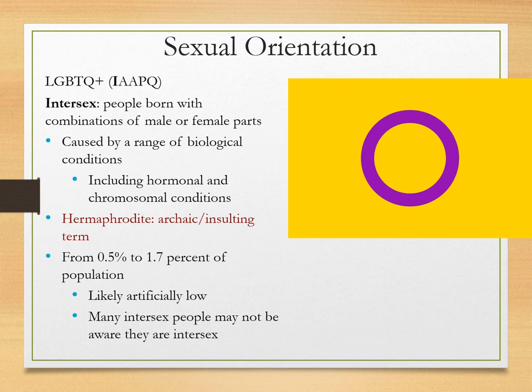Intersex people are people who are born with combinations of male or female parts. Intersex people are a population that is often greatly overlooked. This can be caused by a range of biological conditions — it can happen in utero while a woman is pregnant, it could occur after the child is born, it could be because of a chromosomal condition or an issue in somebody's body chemistry or a hormonal issue. Regardless, these people are biologically somewhere between male and female. Please never use the term hermaphrodite to refer to intersex people — this was once more common but is now considered really unacceptable and insulting.